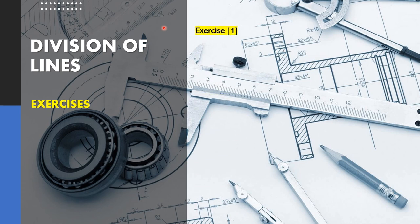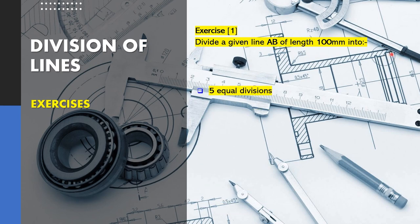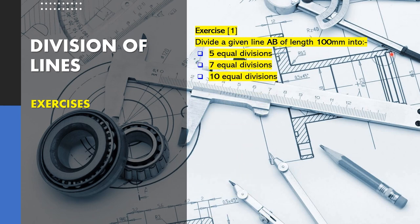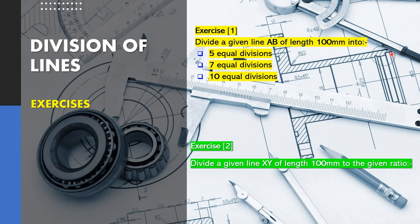The first exercise states: divide the given line AB of 100mm into 5 equal divisions, 7 equal divisions, and 10 equal divisions. For exercise 2, we're going to see how we can divide the line based on a given ratio. The question reads: divide the given line XY of 100mm to the given ratio 2:3:5 and 1:4:7. So let's have a go!